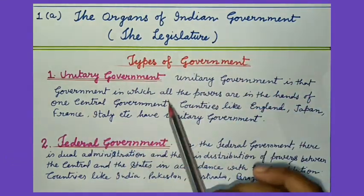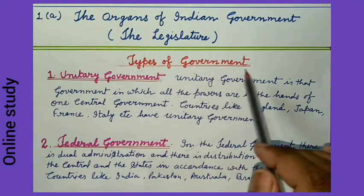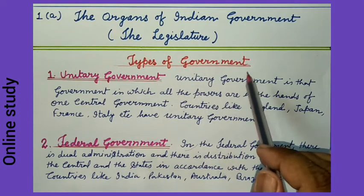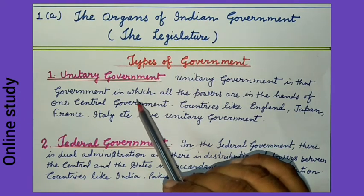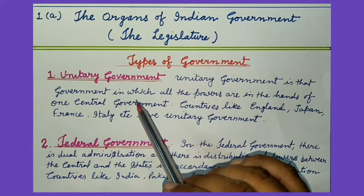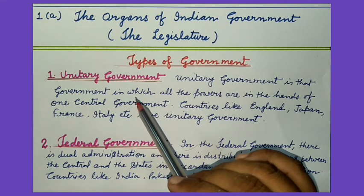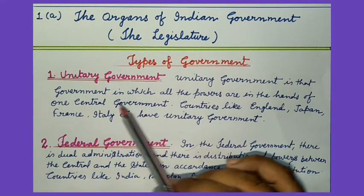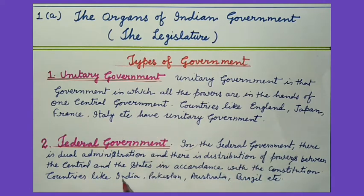We will discuss types of government on the basis of relations between the center and state governments. Governments are of two types: unitary government and federal government.